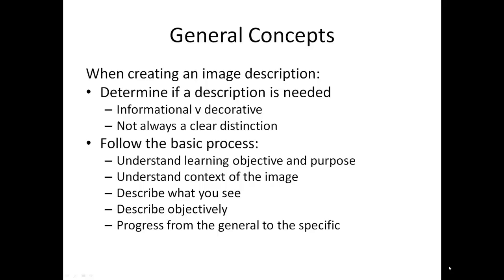As some images can be quite complex, it is often helpful to proceed from the general to the specific. Begin by describing the overall image, the scene or the action that it contains, and then provide details as necessary to support the learning objective and the context of the image. In an illustration of an ecosystem, you might begin by describing the general environment, the organisms found there, and lastly, the relationships between key organisms in the image.